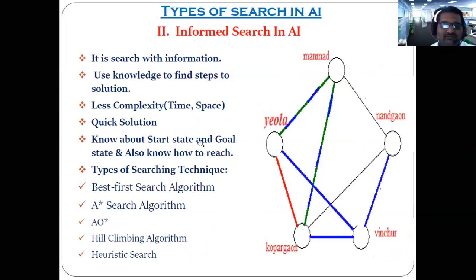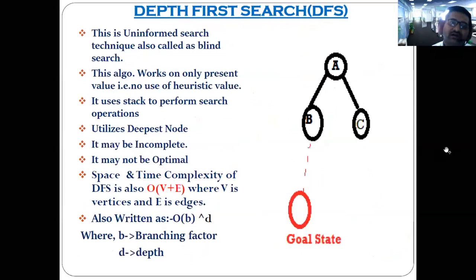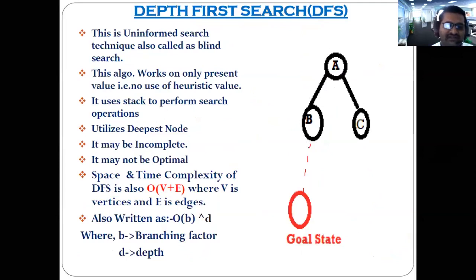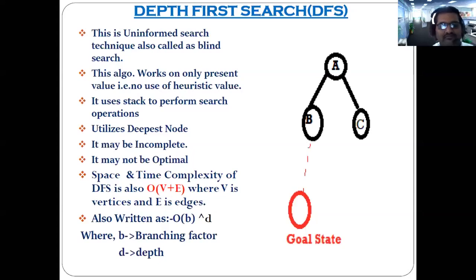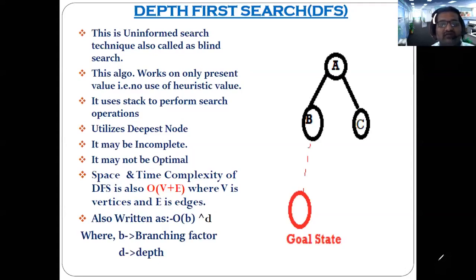Now let's discuss the first technique under the uninformed search: Depth First Search, abbreviated as DFS. You must have studied this before — here we are applying it to artificial intelligence to understand how an AI agent performs searching according to this technique.